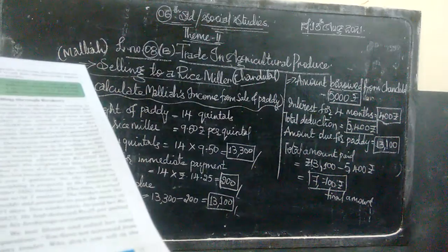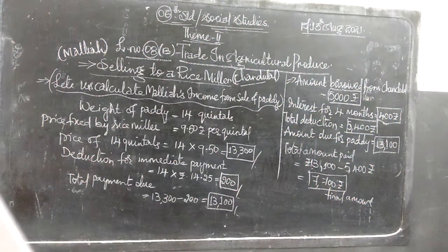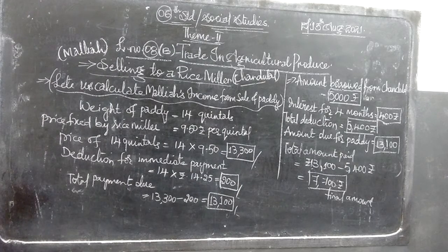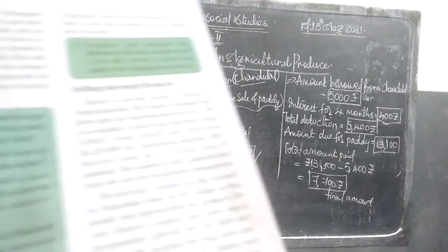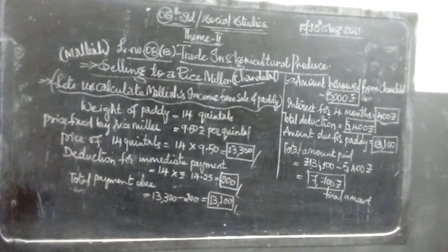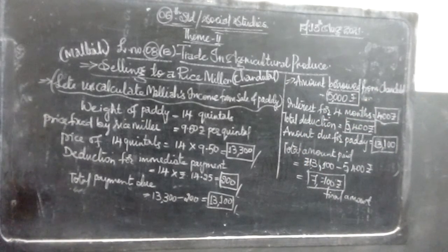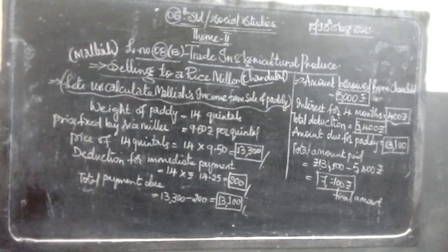Next question: what difference would it have made if Malaya had been able to borrow money from a bank instead of the miller? Malaya could have gone to a bank since he has one acre of land as security, but banks require detailed procedures and take time. If he had borrowed from a government bank instead, the deduction of Rs. 5,400 would have been much less because the government bank interest rates for farmers are lower.